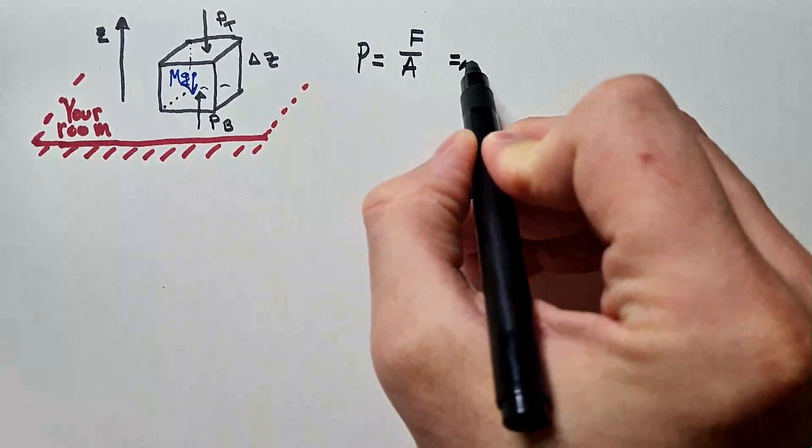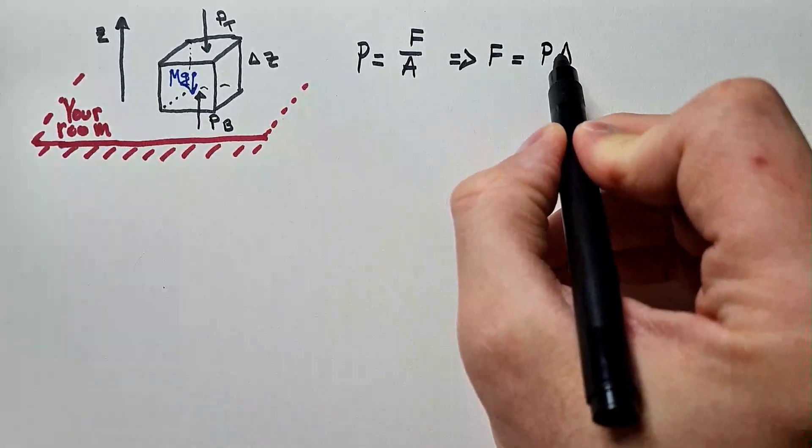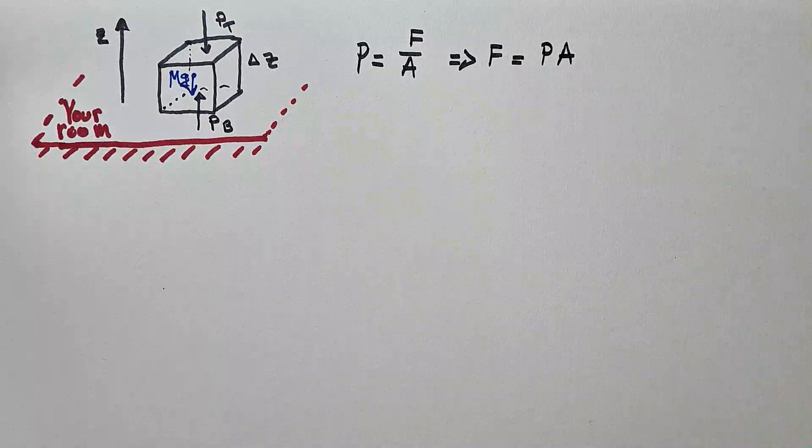Pressure on the top face is pt and pressure on the bottom face is pb. We know that pressure is force over area. So we can say that force is pressure times area, where A is area of the face of this box.